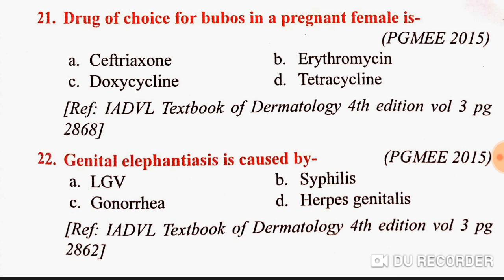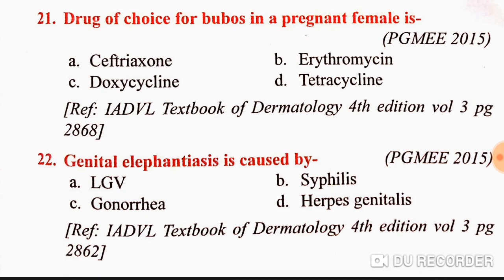Genital elephantiasis is caused by LGV, lymphogranuloma venereum. You can verify whether erythromycin is correct or not via the internet or books and write in the comment box. Genital elephantiasis is a complication of LGV.